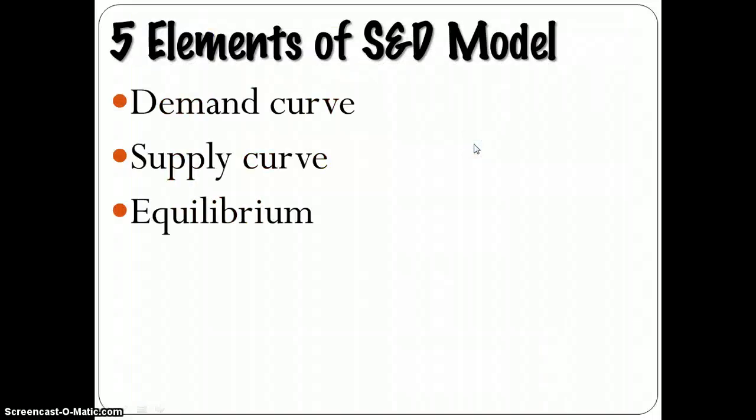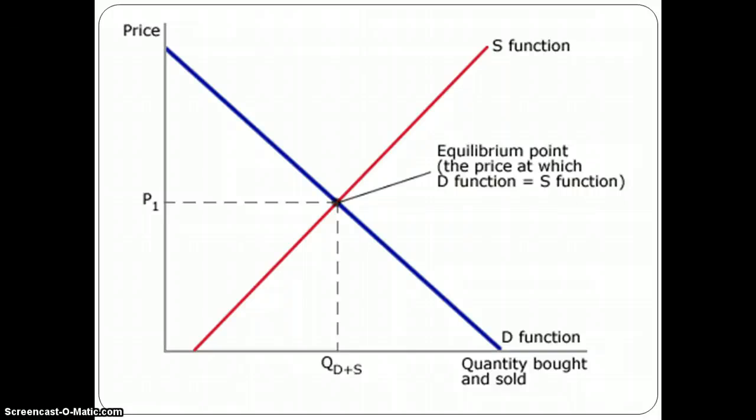We also know that there's this thing called equilibrium, which we've talked about with macro, and the equilibrium is simply the place in which the supply and demand intersect, and that would be our market price and our market quantity. That's where the amount supplied is equal to the amount demanded, and that's where markets tend to head toward, is equilibrium.